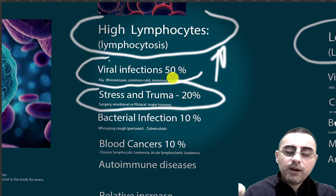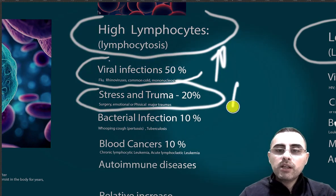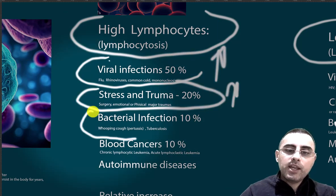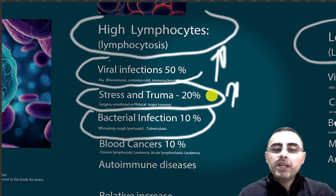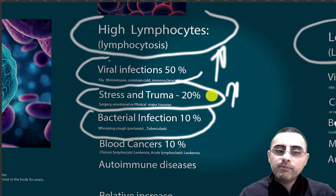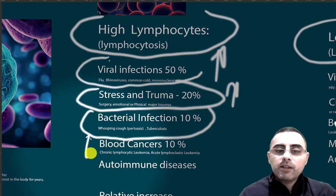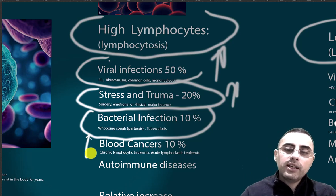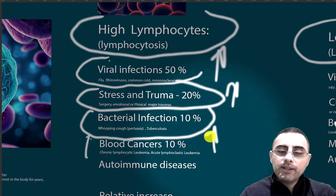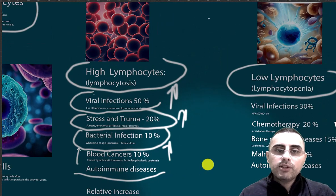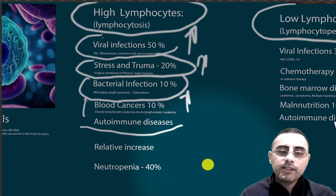Bacterial infections account for about 10% of cases; whooping cough, pertussis, and tuberculosis can cause high lymphocytes. Blood cancers such as chronic lymphocytic leukemia and acute lymphoblastic leukemia can also cause high lymphocyte levels. Autoimmune diseases such as lupus can cause high lymphocytes as well.